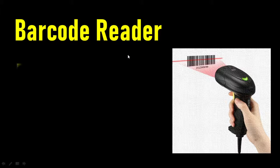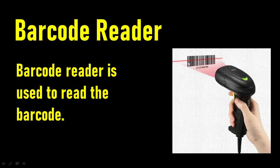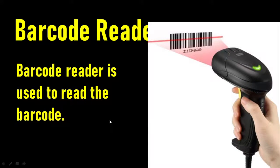Barcode reader. Barcode reader is used to read the barcode. In every product there is a barcode symbol, and to read this you require a barcode reader. It reads the data and sends it to the system, making it easy to identify the product. All product details can be identified via barcode.